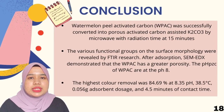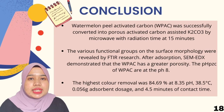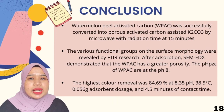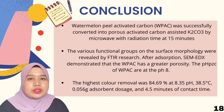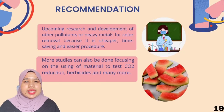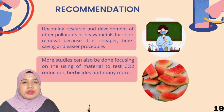In conclusion, watermelon peel was successfully converted into porous activated carbon assisted by potassium carbonate via microwave with radiation time at 50 minutes. The various functional groups on the surface morphology were revealed by FTIR. After adsorption, SEM demonstrated that the watermelon peel activated carbon has greater porosity. The pH-PZC of watermelon peel activated carbon is at pH 8. The highest color removal was 84.69% at pH 8.35, temperature of 38.5 degrees Celsius, 0.05 g of absorbent dose, and 4.5 minutes of contact time. This study indicates potential for future research on removal of other pollutants or heavy metals, as it is cheaper, time-saving, and simpler. More study can also be done focusing on using the material to test for CO2 reduction, herbicide removal, and many more.